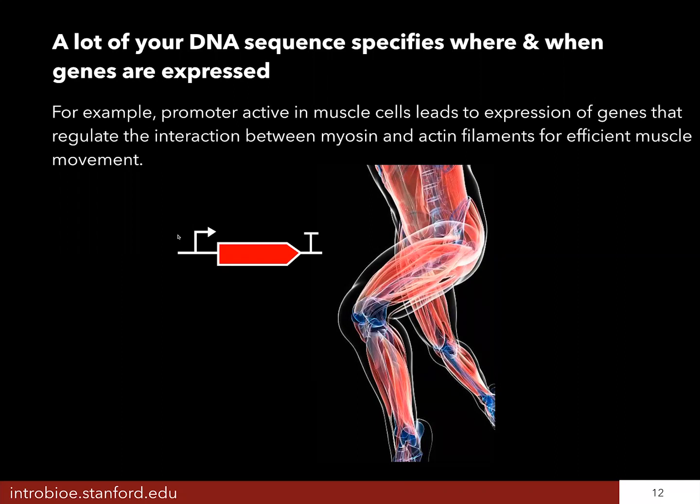Some of that DNA is in promoter and terminator regions that basically control where to turn on the expression of genes. Here's an example where a promoter is driving expression of a gene that is important for muscle cell movement. This promoter would be active only in muscle cells so that you get efficient muscle movement — you actually don't need the protein that this gene encodes in other cells within the body. That's where some of that DNA information is taken up, in these regulatory regions of DNA.